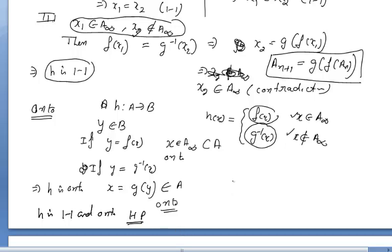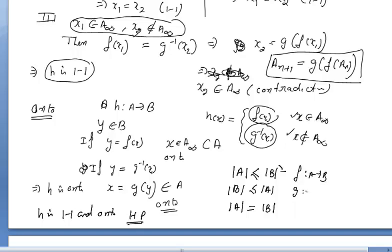Therefore h is one-one and onto, hence proved. In summary: if cardinality of A ≤ cardinality of B and cardinality of B ≤ cardinality of A, then cardinality of A equals cardinality of B. This is only possible because there exists a function f from A to B and g from B to A both one-one, and then there exists h from A to B which is bijective. This completes the proof of the Schroeder-Bernstein theorem.